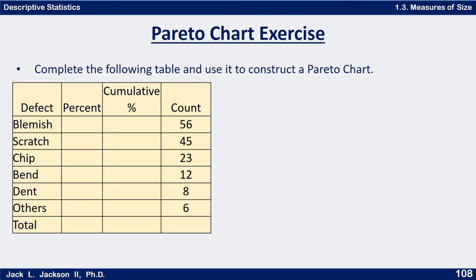Let's see if you can construct a Pareto chart. Here's another manufacturing situation with several types of defects: blemishes, scratch, chip, bend, dent, and all others put together. You are given the counts. Determine the percentages — the relative frequencies — and then the cumulative percentages, the cumulative relative frequencies, and use that information to make a Pareto chart. Get out some graph paper, work through this carefully, and draw a good Pareto chart. When you're done, come back and check your work. Press pause now.